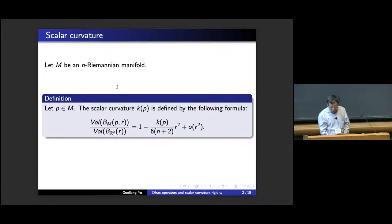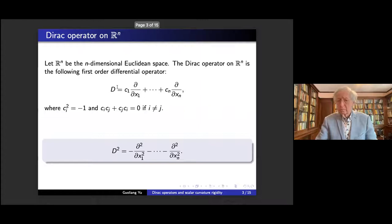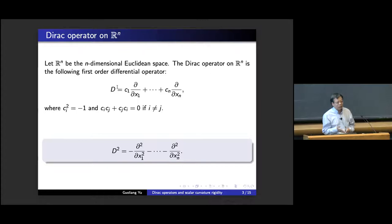It turns out one of the most powerful methods for studying this invariant is a quantum method, by which I mean we need to look for the right operator which encodes all information about scalar curvature. This is one of my very favorite operators — it's very elementary. For the rest of this talk, I will focus on Euclidean space; we don't really need to look at more complicated manifolds. We are looking for a first-order differential operator whose square is the Laplacian.